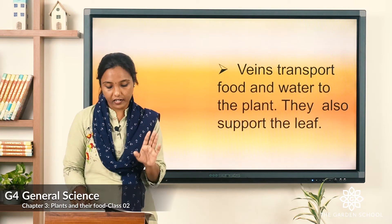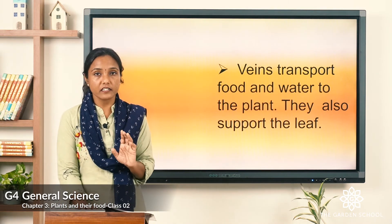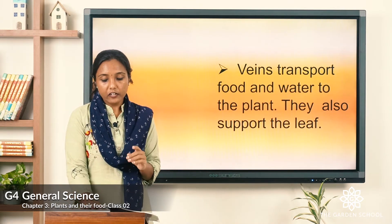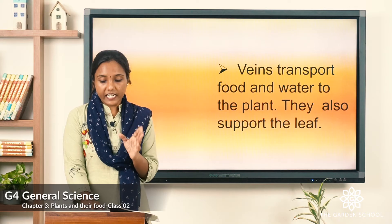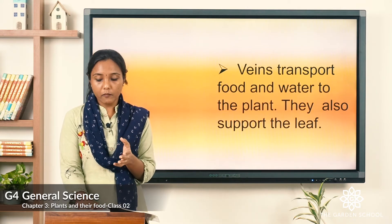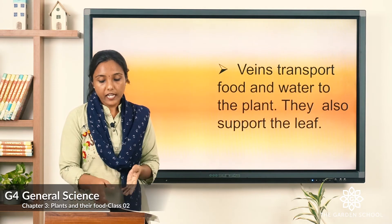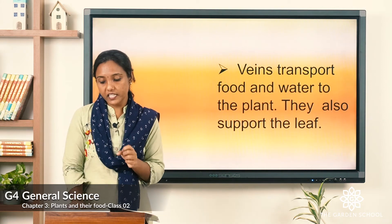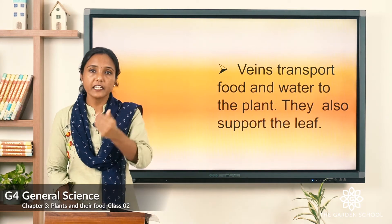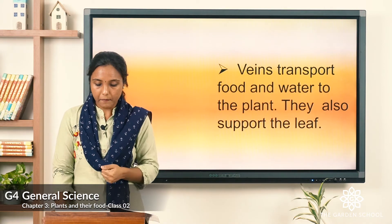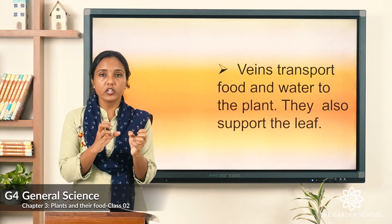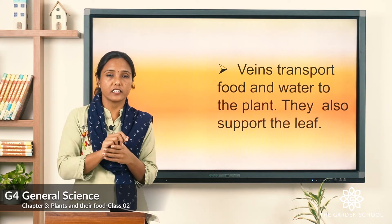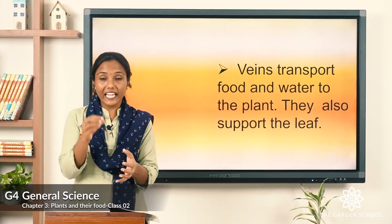On page 27 we have an activity. You have to take a white carnation or balsam flower with a stem, make a fresh slanting cut at the end of the stem, and take a vase with tap water. Fill the vase with tap water and add a little food color to it, then place the flower in the vase.